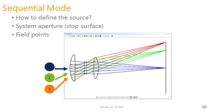One of the most common questions at technical support is: how do I define my source and source size in sequential mode? The trick is that it's not defined by the diameter of your object surface. It's defined by two things: the system aperture — the stop surface — which defines the full extent of the rays, and the field points, which define where the rays come from. In sequential mode, we don't launch all possible rays from the source; we pick a few specific points and look at rays from those points.